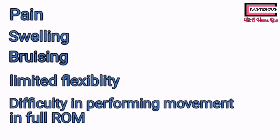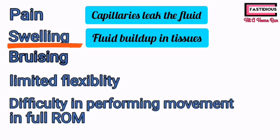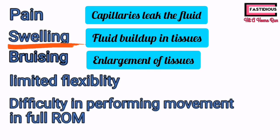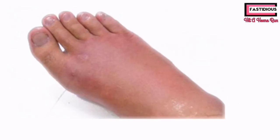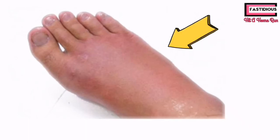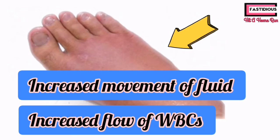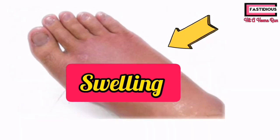Another prominent symptom of sprain is swelling. When tiny blood vessels called capillaries leak fluid due to injury, fluid starts building up in the tissues, resulting in the enlargement of those tissues, which leads to enlargement of that particular area — this is known as swelling. It can be localized to a specific area or generalized throughout the body. In the case of sprain, when the ligament tears, there is increased movement of fluid into the injured area and increased flow of white blood cells towards the site of injury, resulting in swelling.